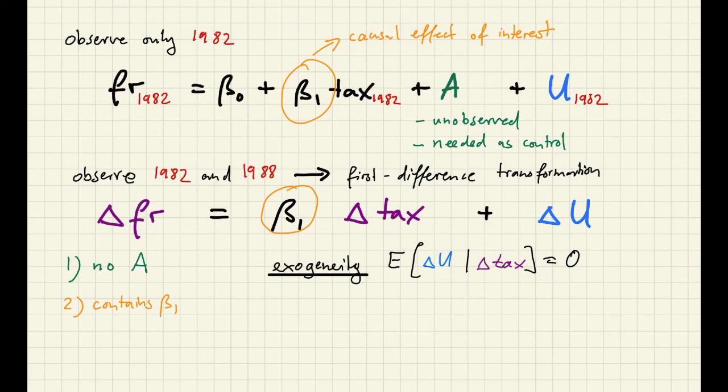The next assumption that I want to check is the full rank assumption. And in this case where we have a single regressor, the full rank assumption is equivalent to assuming that the variance of the regressor is strictly positive. So this here just says that there is positive probability that lawmakers will change the tax between 1982 and 1988. This variance will be zero if lawmakers in all states don't plan any tax changes. So the full rank assumption will fail if taxes don't change over time.